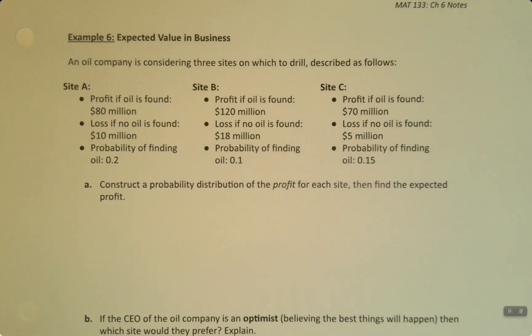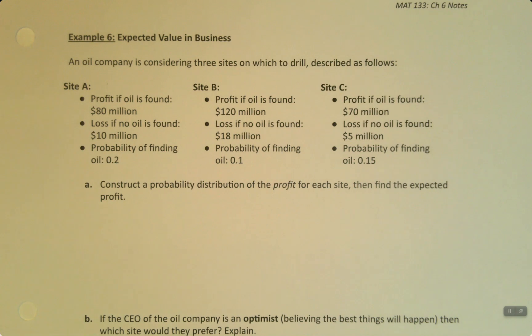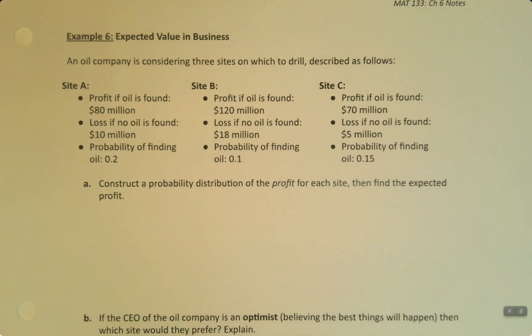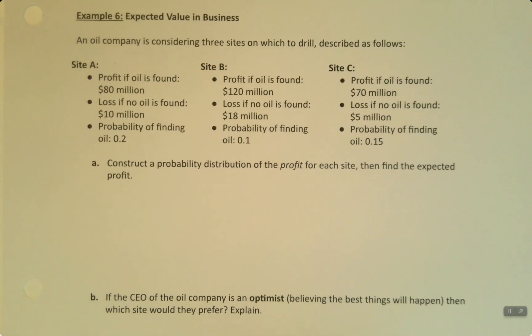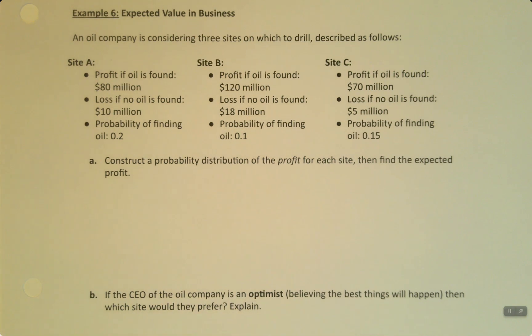So now we're going to continue with expected value with a different example. And this time we're actually going to have to find the probability distributions as well as the expected profits. An oil company is considering three sites on which to drill, described as values. Obviously these are extremely simplified versions of the kind of calculations that actual businesses make, but I just wanted to get the flavor of it.